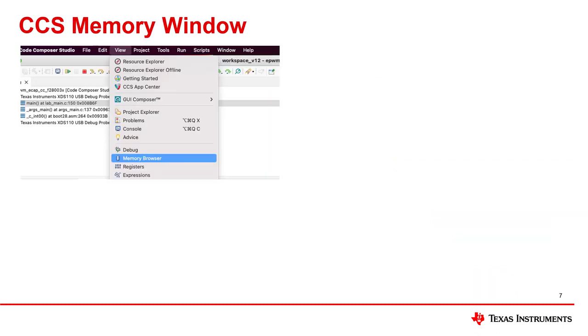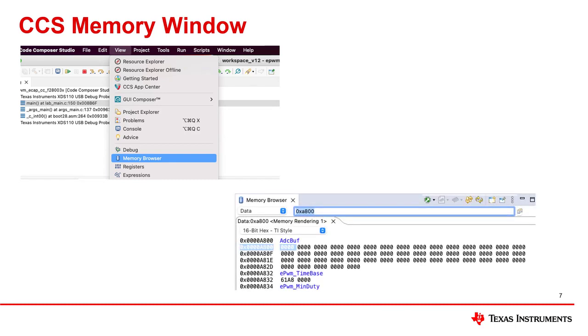To assist in debugging, Code Composer Studio provides a memory browser that makes viewing and modifying the device memory a simple process. The window for memory browser contains many configurable options to choose which locations are read from and in what format. It can be opened by going to view and selecting the memory browser option.